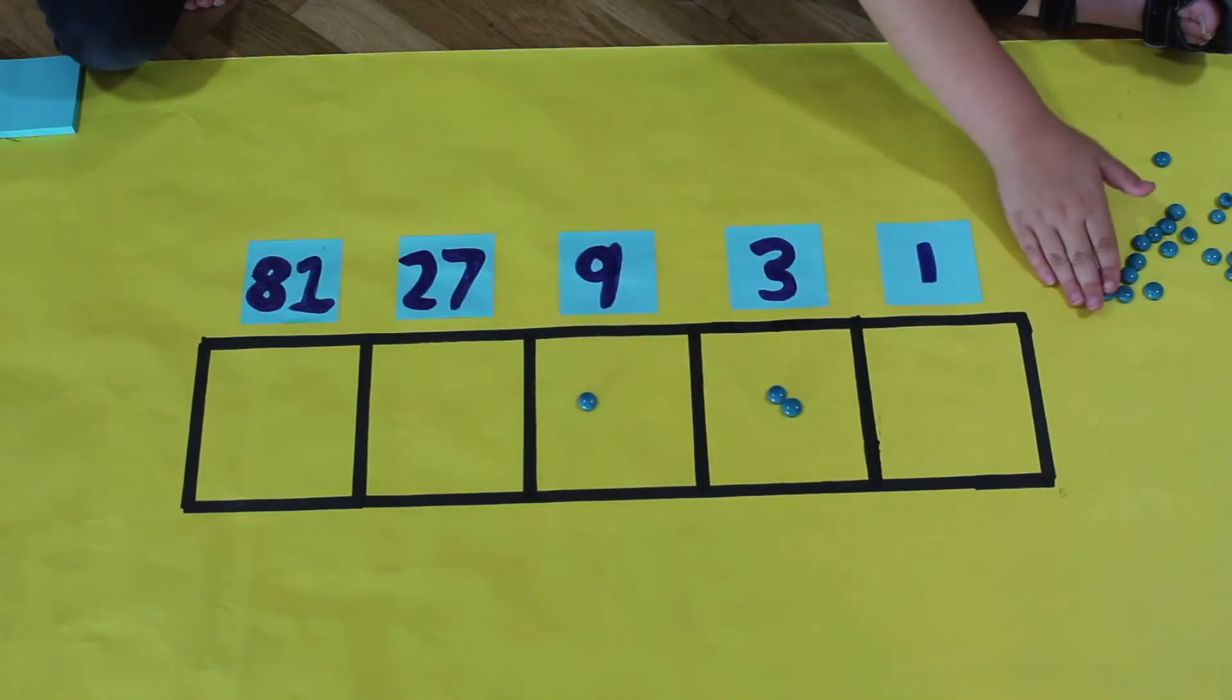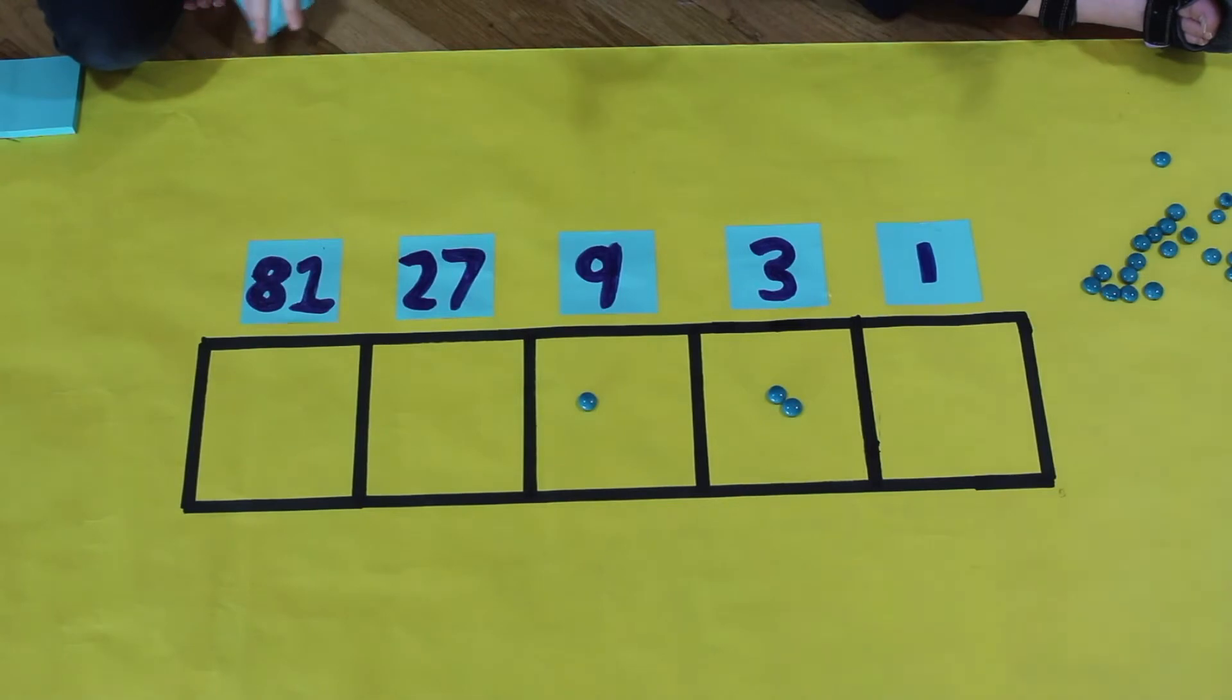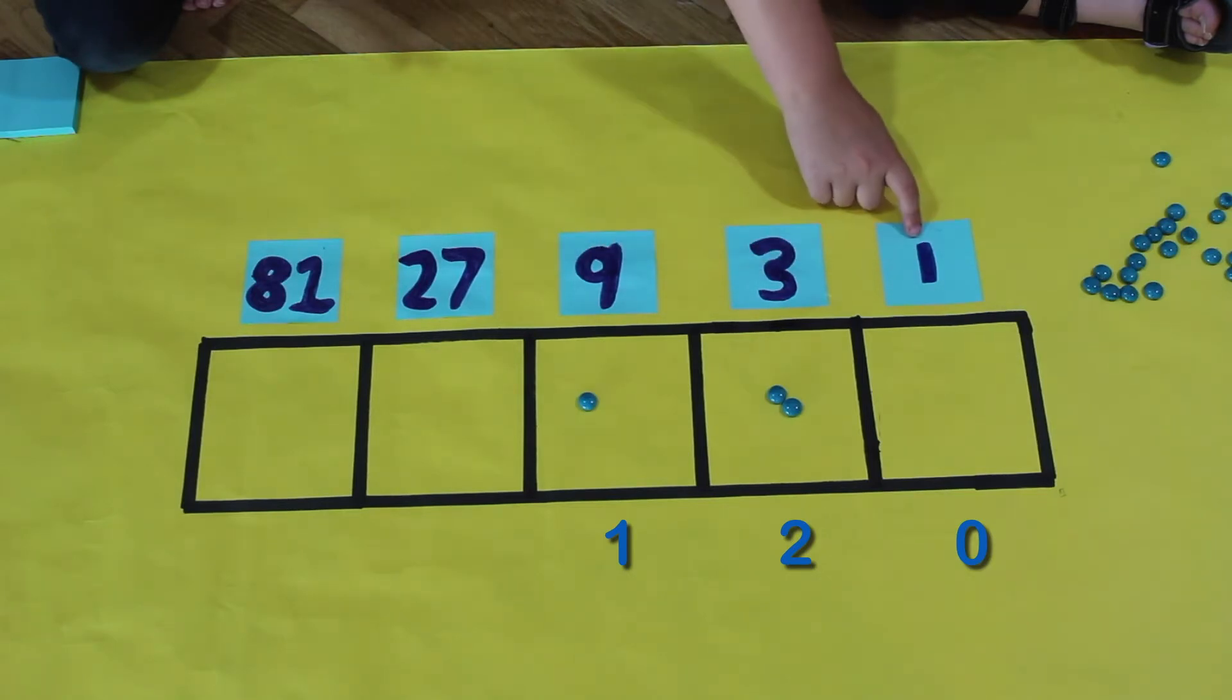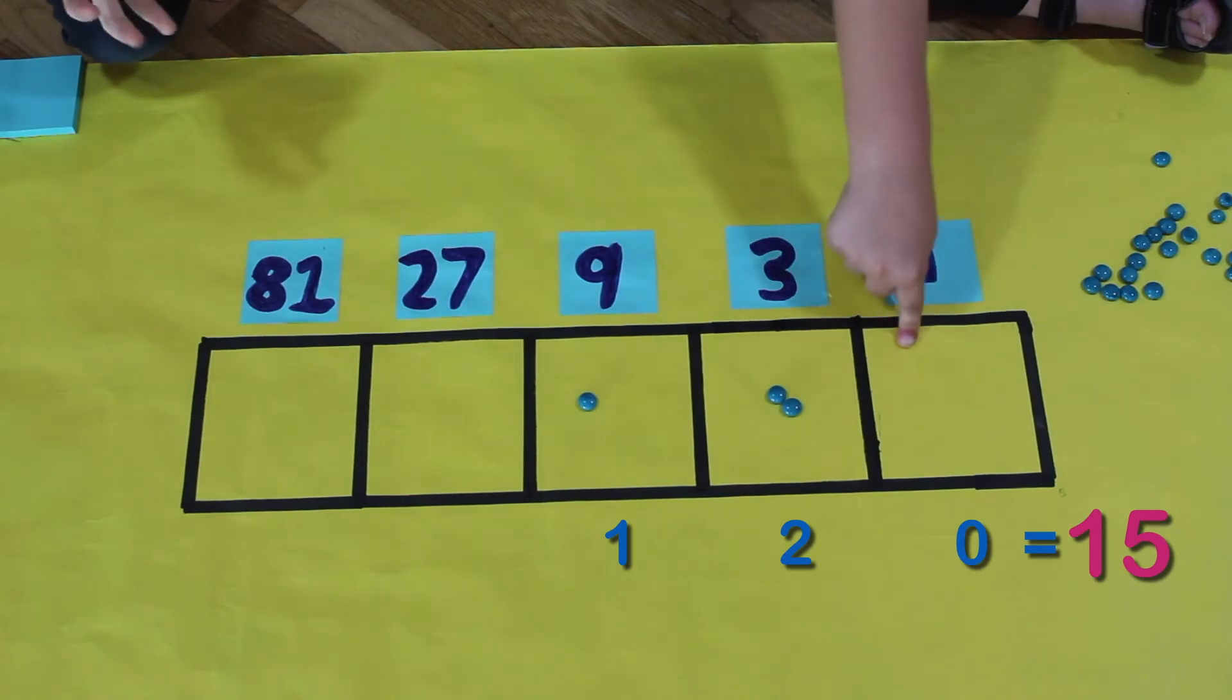Which leaves us with one two zero. So one nine, two threes, and no ones. So nine plus three plus three, which would be nine plus six, which is fifteen, the number we started with.